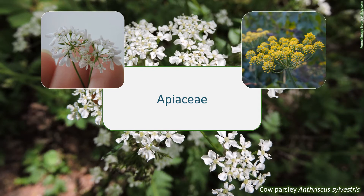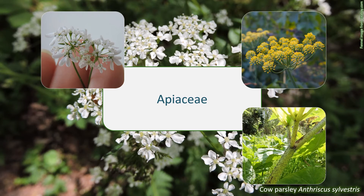Dill, Anethum graveolens, aniseed, and several others can be used medicinally. It should be noted, however, that this family also contains species that are toxic, some quite impressively so, like hemlock and hemlock water dropwort. Giant hogweed and wild parsnip, Pastinaca sativa, contain chemical compounds in their sap that cause burns on skin when exposed to sunlight.